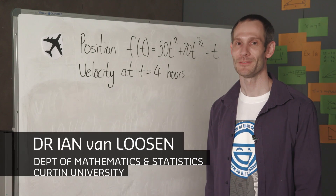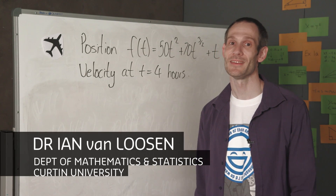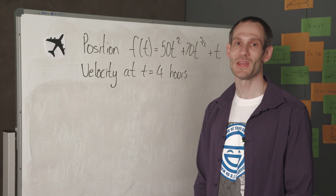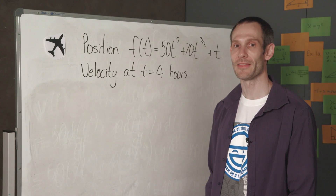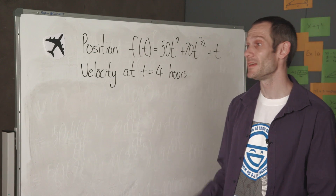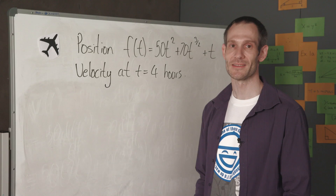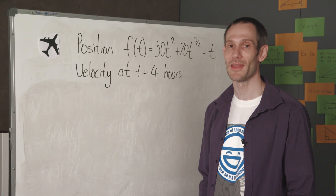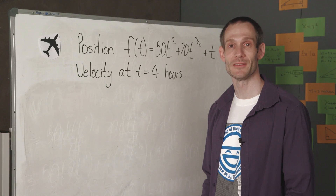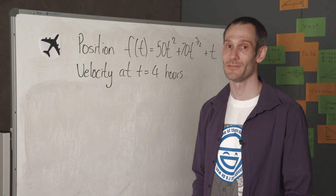Hi, I'm Dr. Ian Van Luton from the Department of Mathematics and Statistics at Curtin University. Let's assume we have a plane flying along a straight path and its position at time t is given by the following function. What we would like to know is the velocity of the plane at the fourth hour. To determine the answer to a question such as this, we can use differentiation.